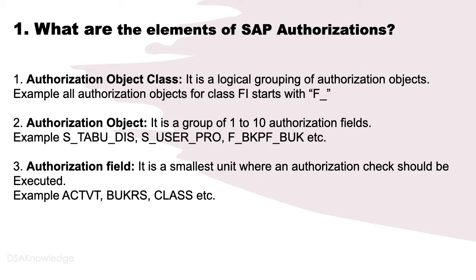Number 2: Authorization object. It is a group of 1 to 10 authorization fields. Examples include S_TABU_DIS, S_USER_GRP, F_BKPF, F_BUK, etc.